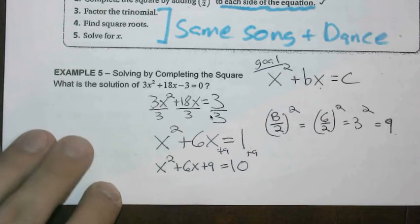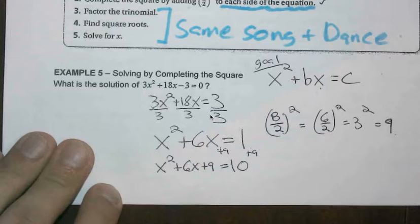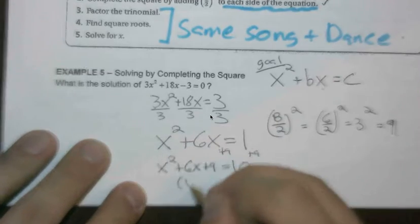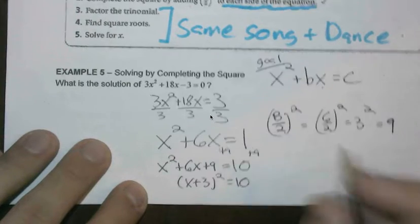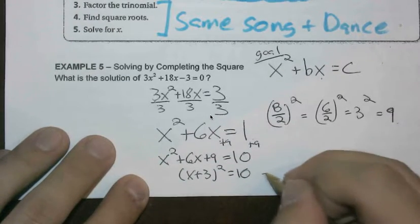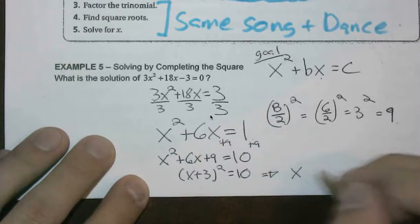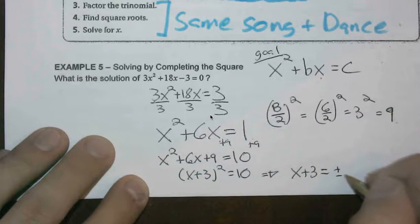And so now it's the same song and dance as we saw in the previous set of problems. So this is x plus 3 being squared. This equals 10. We take square roots for both sides. We're left with x plus 3 equals plus or minus root 10.